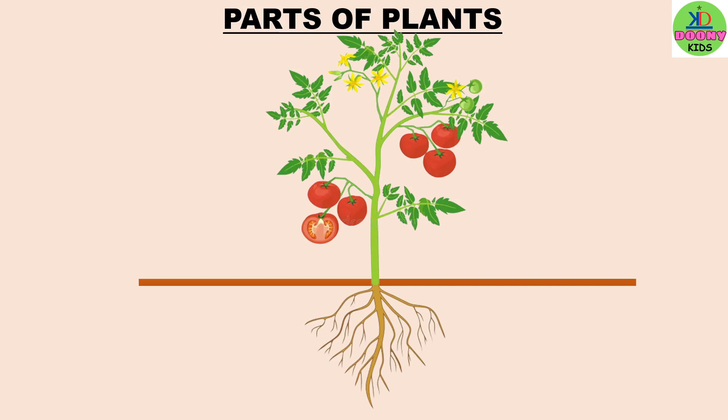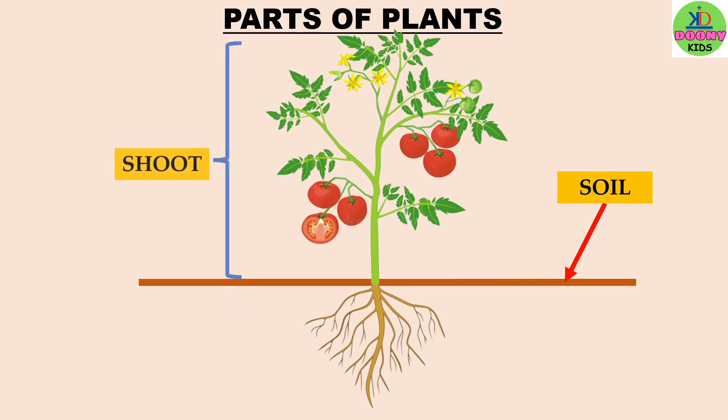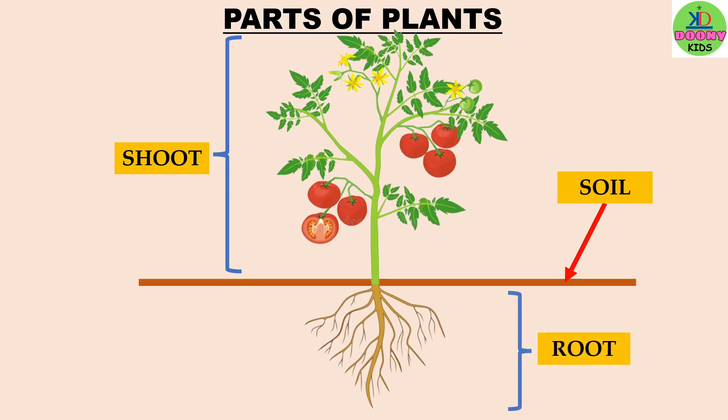For a plant, there are mainly two parts. One part is above the soil — it is called shoot (S-H-O-O-T), above the soil. And another part is below the soil, and it is called root (R-O-O-T).